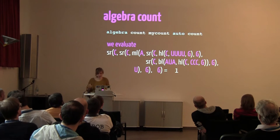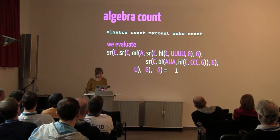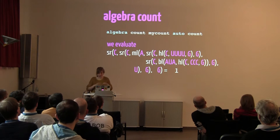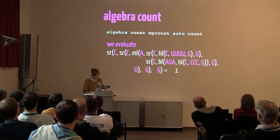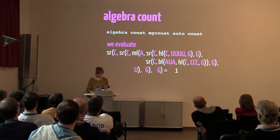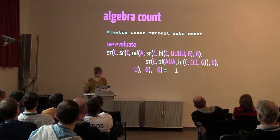If we just want to count the RNA structures, we almost don't have to write anything — the compiler does it for us. We can write 'algebra mycount auto count', and when we evaluate this, we see there's just one folding of it, so for counting we get one.